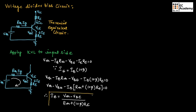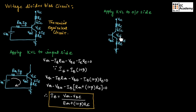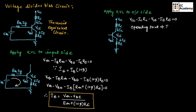This is the expression for input current. Now let us apply KVL to the output side. Applying KVL, we get: Vcc − Ic·Rc − Vce − Ie·Re = 0. Since we need to find the operating point, we need expressions for Ic and Vce. From the above equation: Ic = (Vcc − Vce − Ie·Re) / Rc.